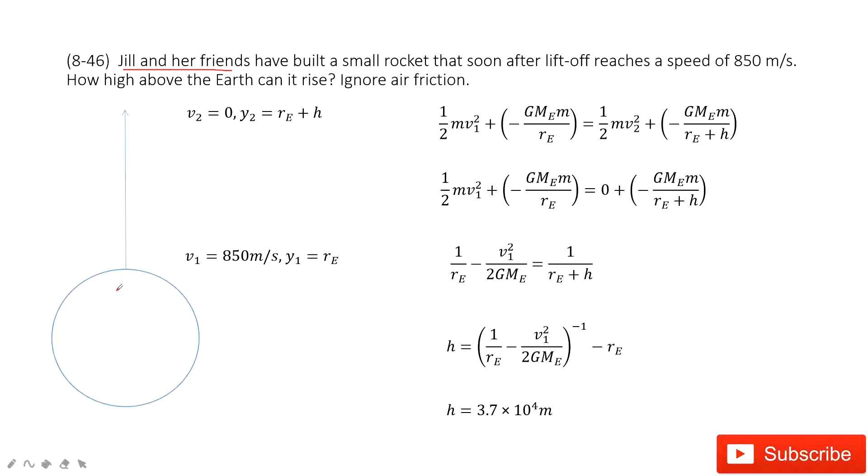Jill and her friends build a small rocket. The initial position is just above the Earth's surface. The initial velocity and position are given.